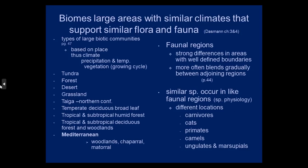South Africa has some Mediterranean-type biomes, as does parts of Australia. Around the Mediterranean is how it got its name. So we've now gone through the different types of biomes, and then we have faunal regions, where there are strong differences in areas with well-defined boundaries.